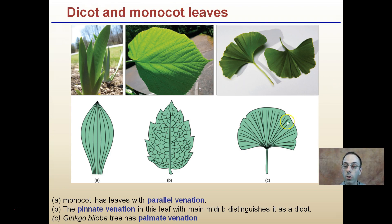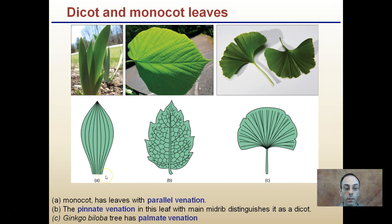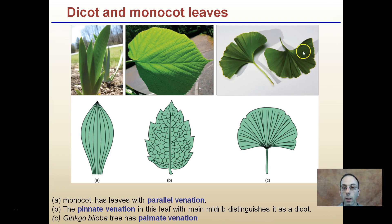Dicot and monocot leaves do differ. Monocots have leaves with parallel venation, meaning all the veins run parallel to one another. In contrast, pinnate venation — where a leaf has a main midrib — distinguishes it as a dicot, with a network branching off from there. Ginkgo biloba has what's called palmate venation, where veins spread out like the palm of your hand. Remember, ginkgo is a gymnosperm in the same classification as conifers such as pine trees.